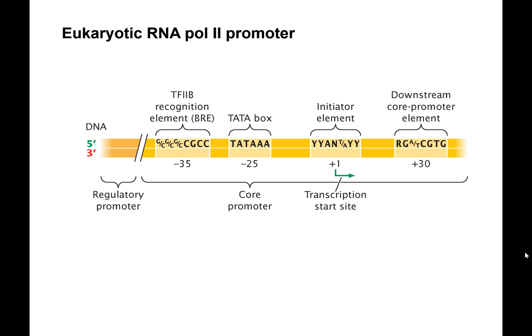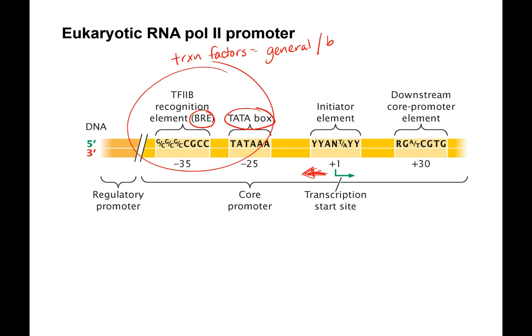What's important to know about the eukaryotic RNA polymerase promoters is the TATA box and the BRE element. Again, these are upstream of the plus one site — these are the only two we're worried about. They are important for binding transcription factors, which are general or basal factors that work on all RNA Pol 2 promoters. They bind these consensus sequences so that they can work on all the different promoters.